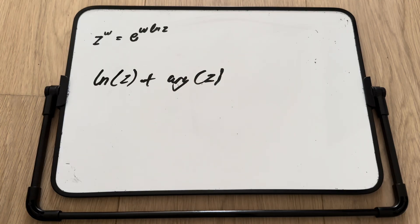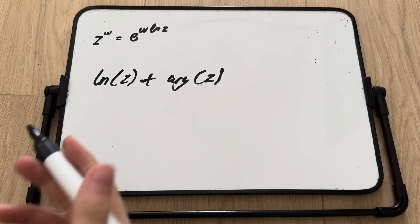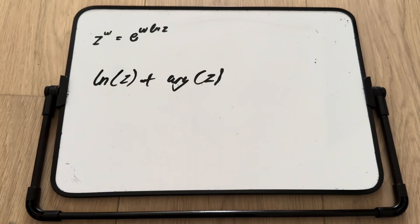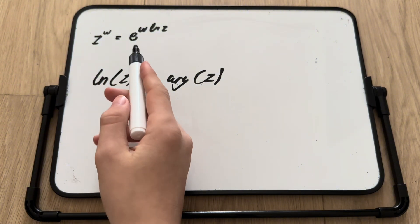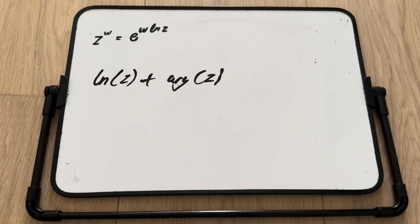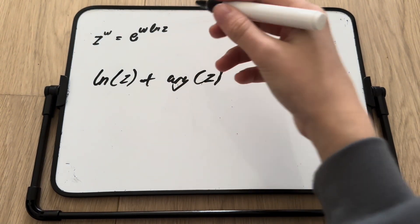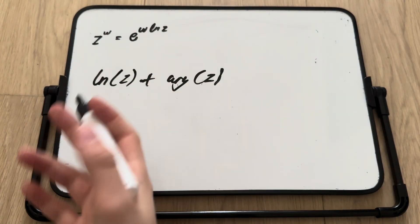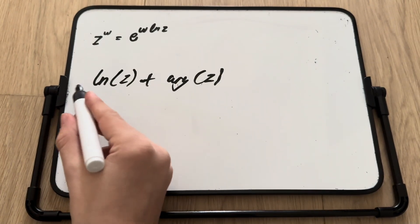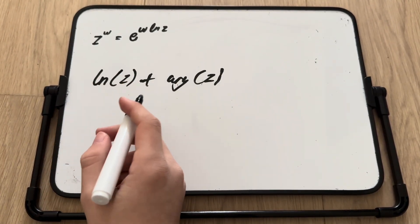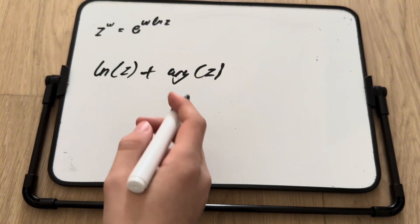So let's begin. The general formula for complex powers is z to the w is equal to e to the w multiplied by natural logarithm of z. And if you remember, the natural logarithm of any complex number is formally defined as natural logarithm of z plus the argument slash angle of z.